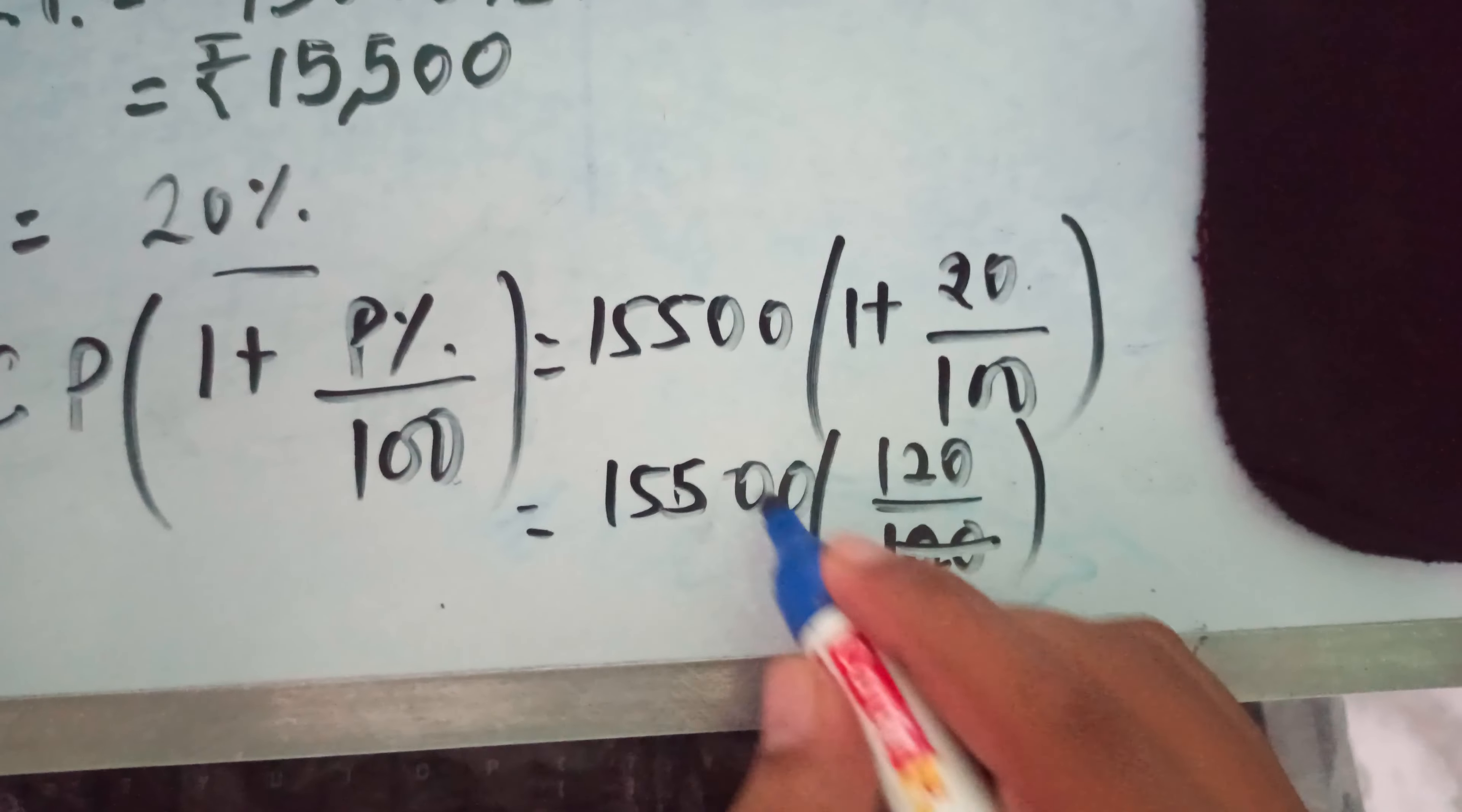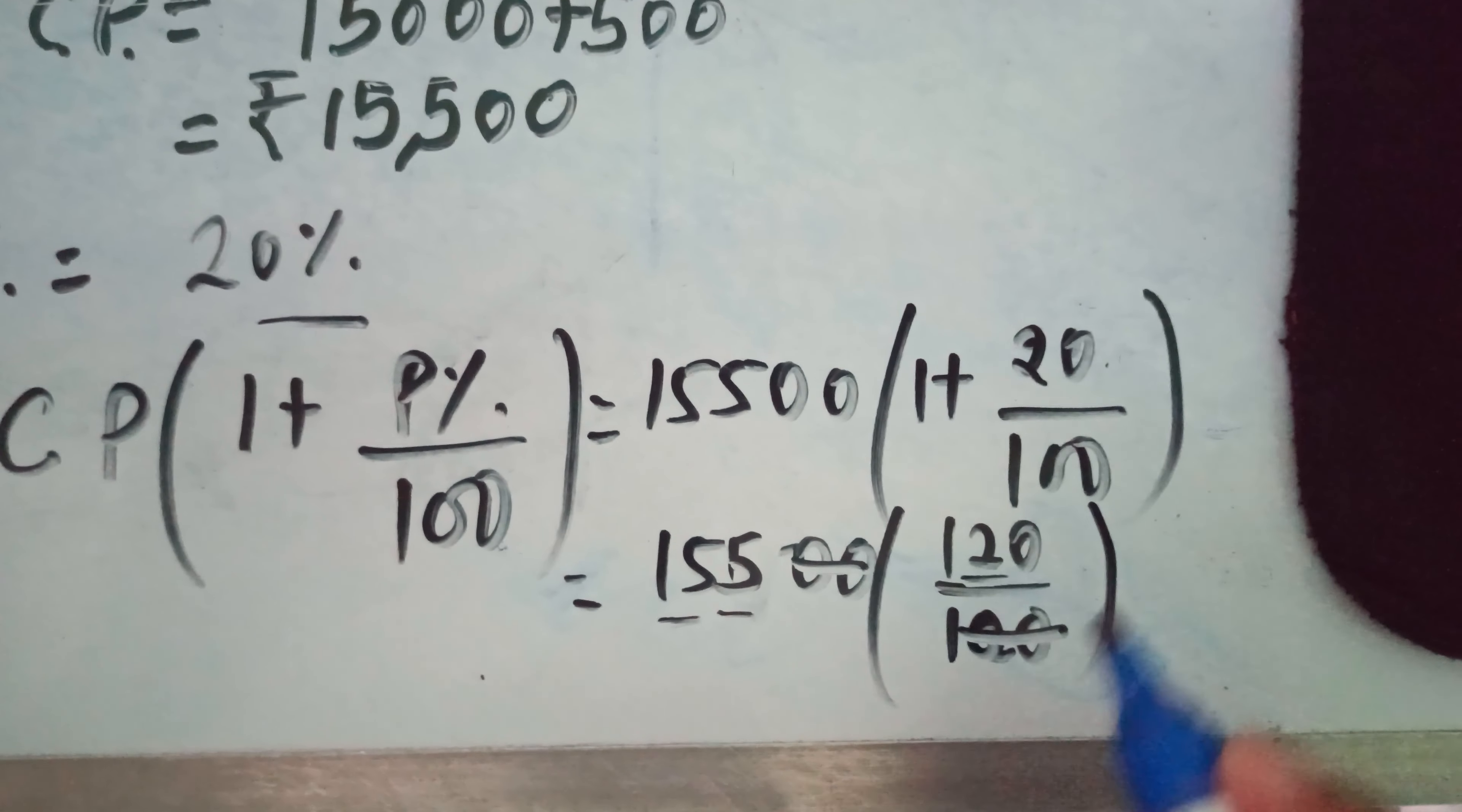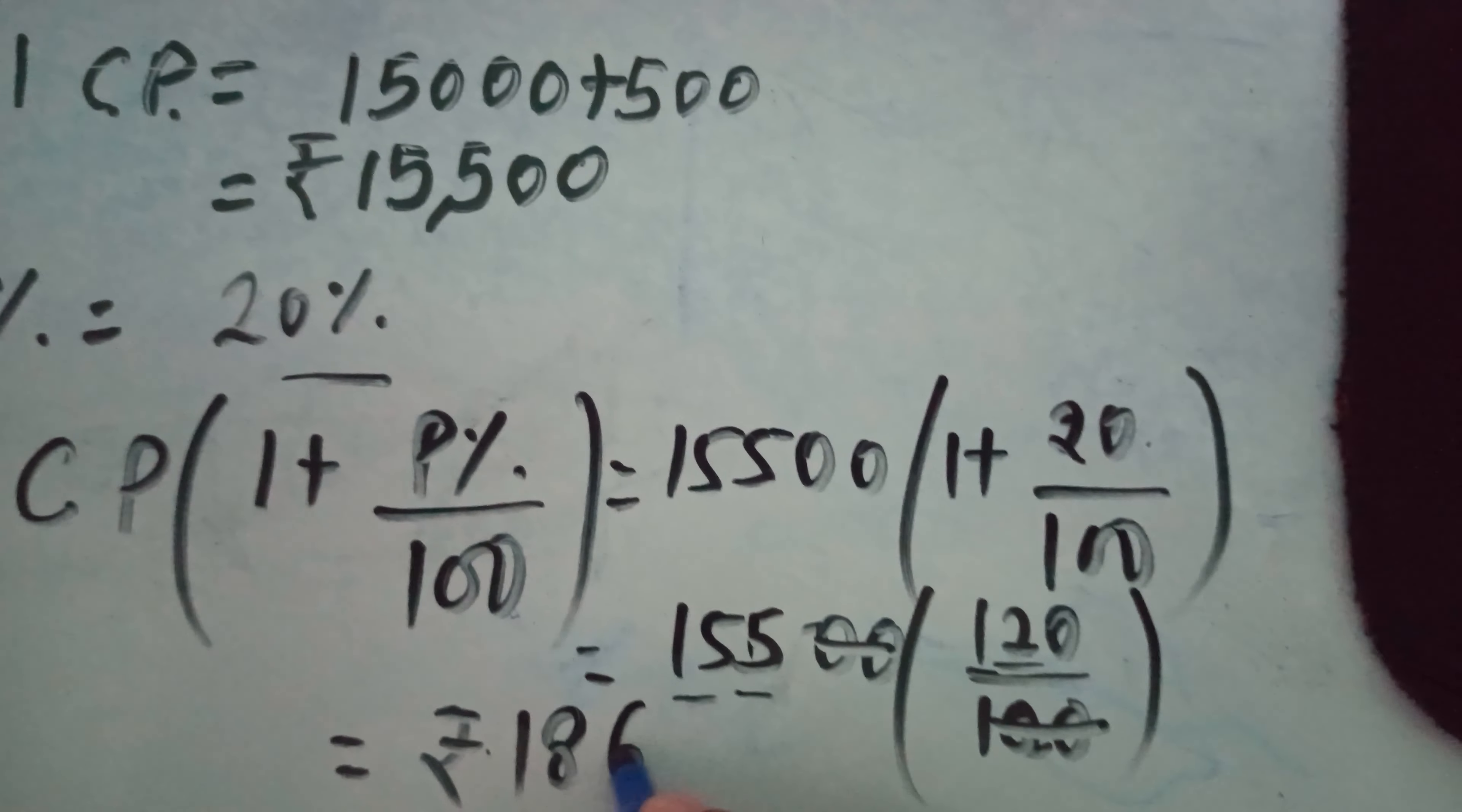20 and 20 cancel out. Then if you multiply, 155 by 120, we get ₹18,600.